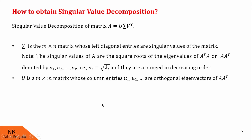Next, we will talk about matrix U. U is an M cross M matrix — note that M is the number of rows of matrix A — whose column entries are U1, U2, and so on. These are orthogonal eigenvectors of A into A transpose. So if you want to find out U, first find the eigenvectors of A into A transpose and arrange them column-wise to get matrix U.